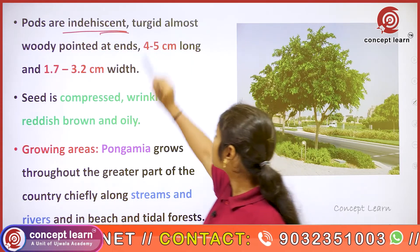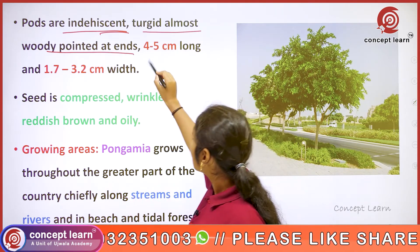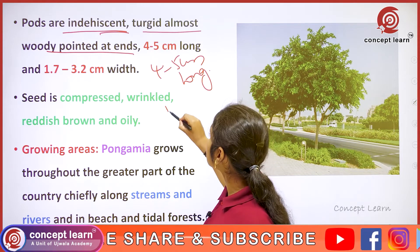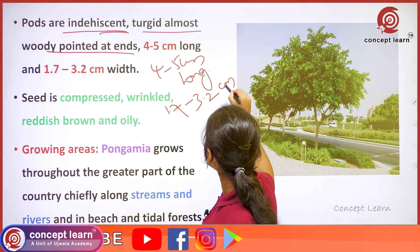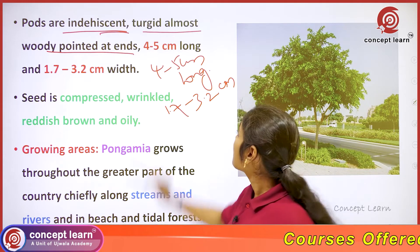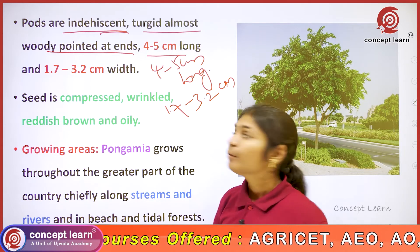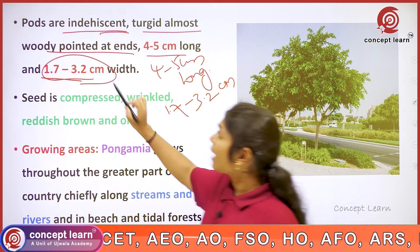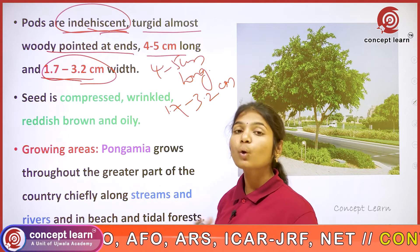Pods are indehiscent, turgid, almost woody, pointed at ends, 4 to 5 centimeters long and 1.7 to 3.2 centimeters wide. Indehiscent means they won't open by themselves.